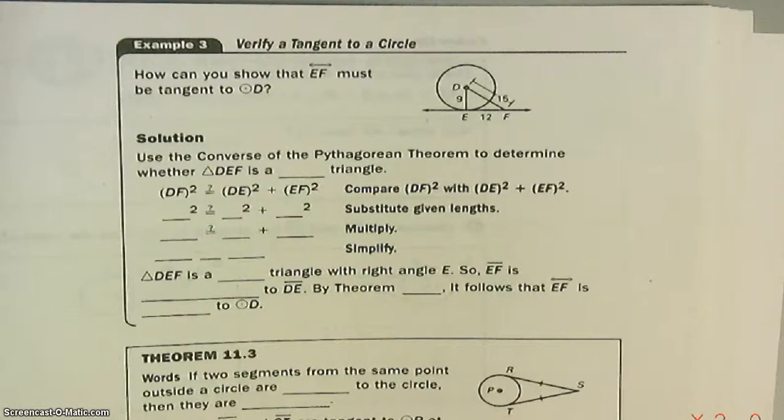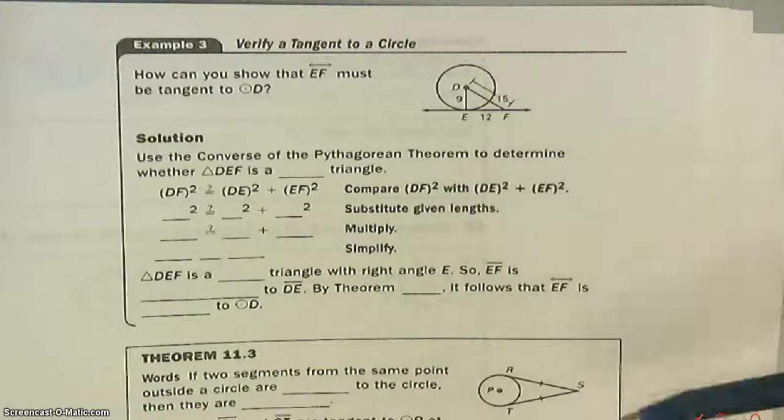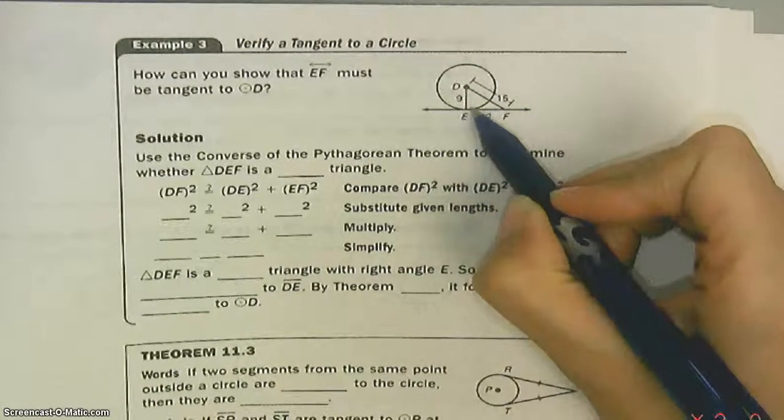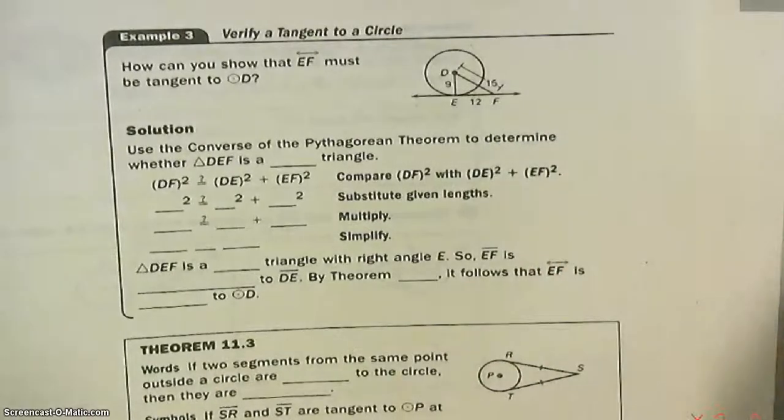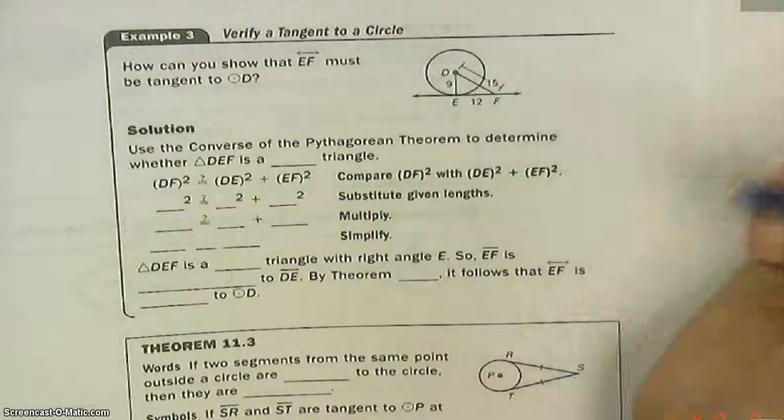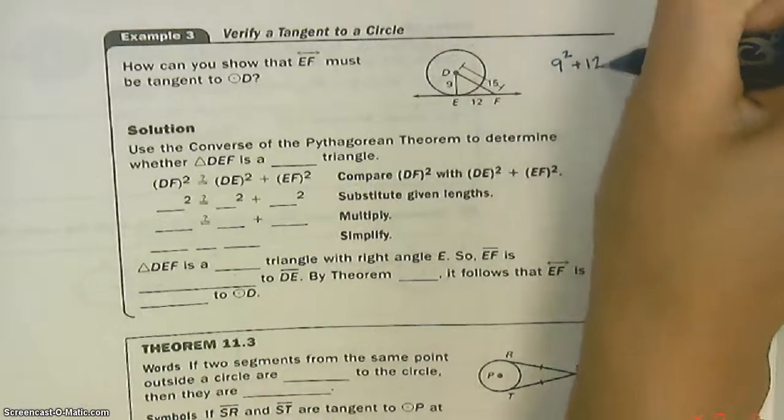Example 3: How can you show that EF must be tangent to circle D? EF. Well, it looks like it, but we have to prove it. We have to prove that this is a right angle. If it's a right angle, A squared plus B squared is going to equal C squared. We have to make sure that that's true. So, we're going to check. Is 9 squared plus 12 squared, is it equal to 15 squared?